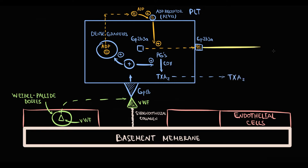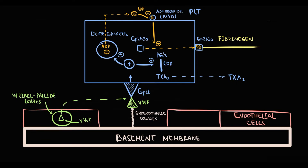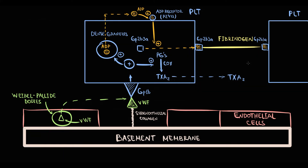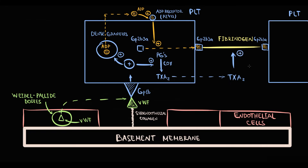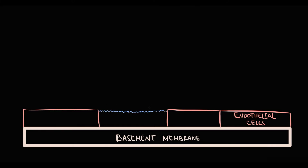When fibrinogen notices a GP2B3A receptor on the platelet surface, fibrinogen immediately binds to GP2B3A. When another platelet comes to the site of injury, it immediately binds by GP2B3A to fibrinogen, and this process is significantly accelerated by thromboxane A2. This binding occurs over and over again until a platelet plaque is formed. And exactly this gathering of platelets at the site of injury is called aggregation, which results in formation of a platelet plaque.